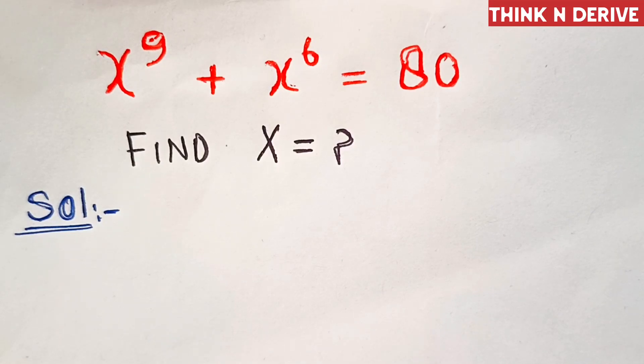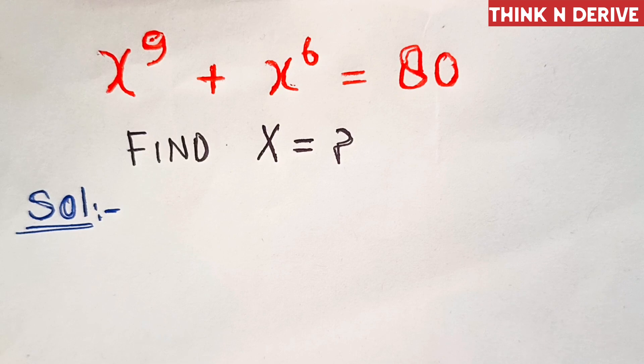Hi everyone. x power 9 plus x power 6 equal to 80, and we'll find the value of x. So let's start.